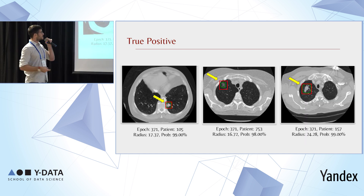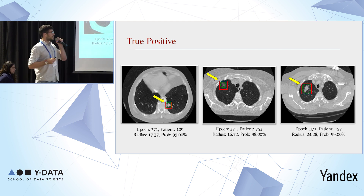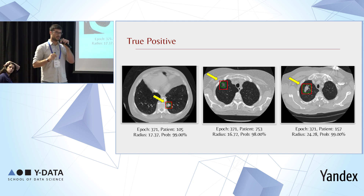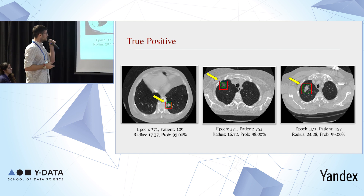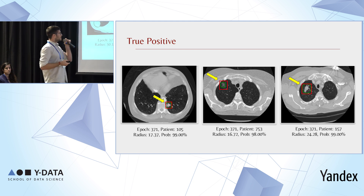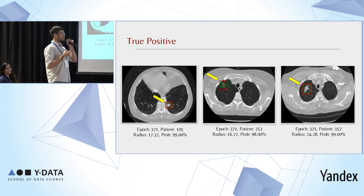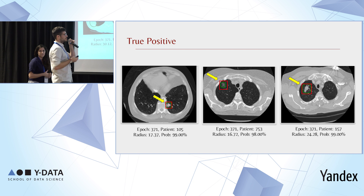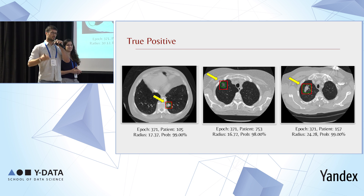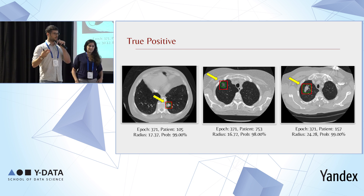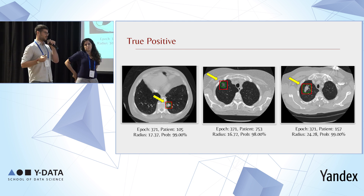Here are several examples of true positives — the square being the original annotation in the dataset and the circle being the detection from our model, together with the radius and the probability that the detector assigned. Here you can also see some false positives from the model. We don't know exactly why the detector flagged them, but you can think about why these small masses were detected as such. At this point we trained the detector to a state-of-the-art status and are ready to build upon it a more advanced system.